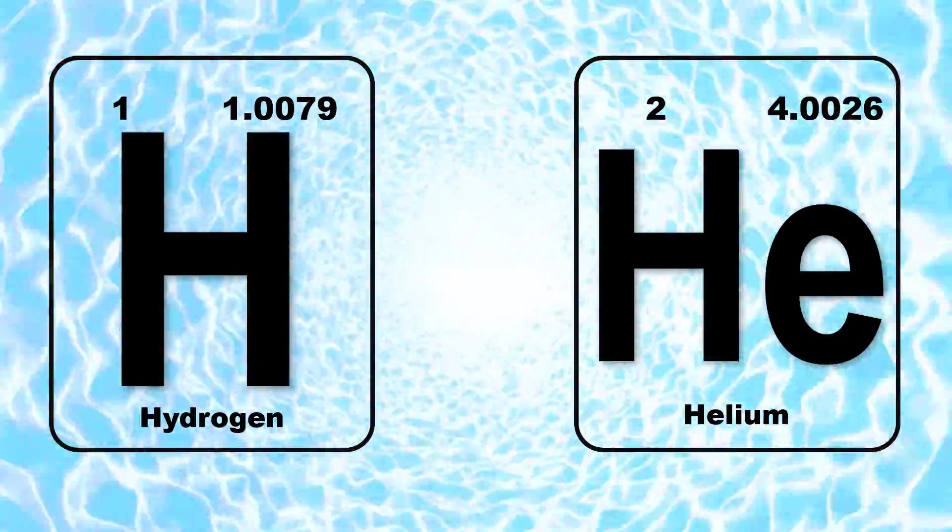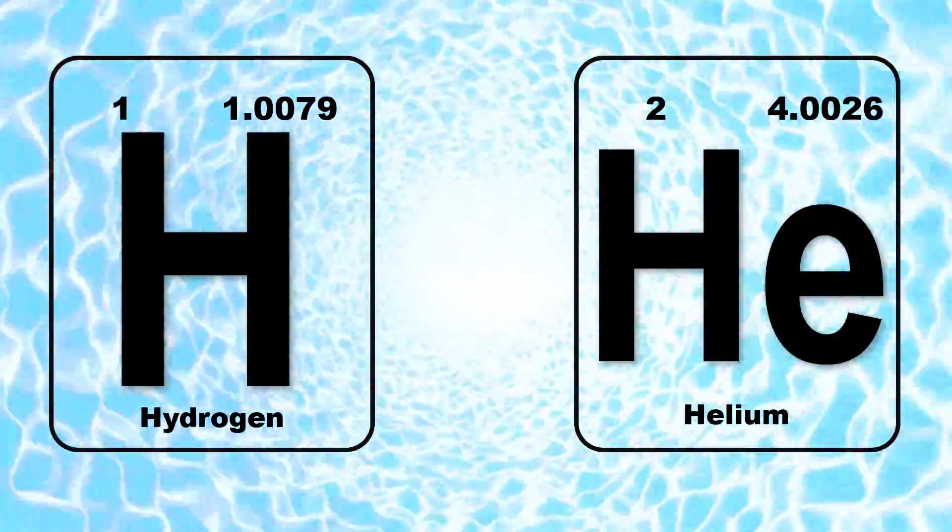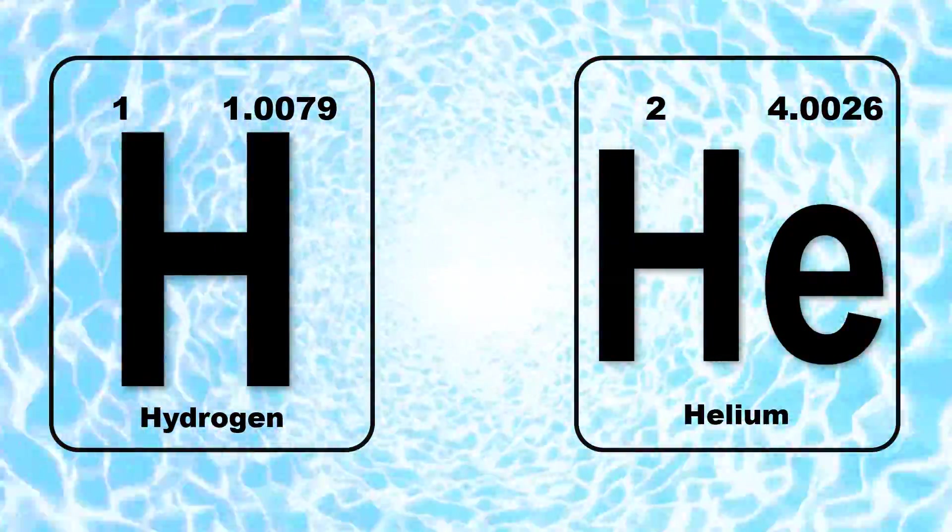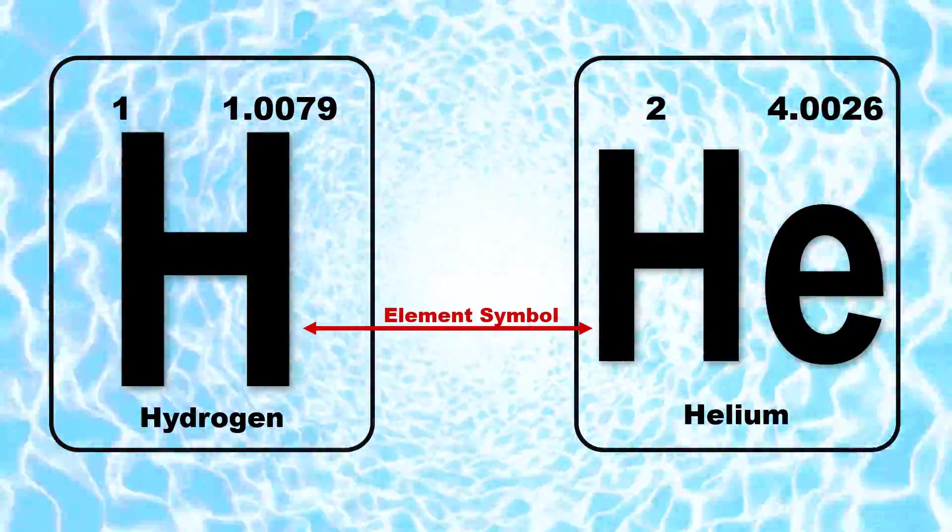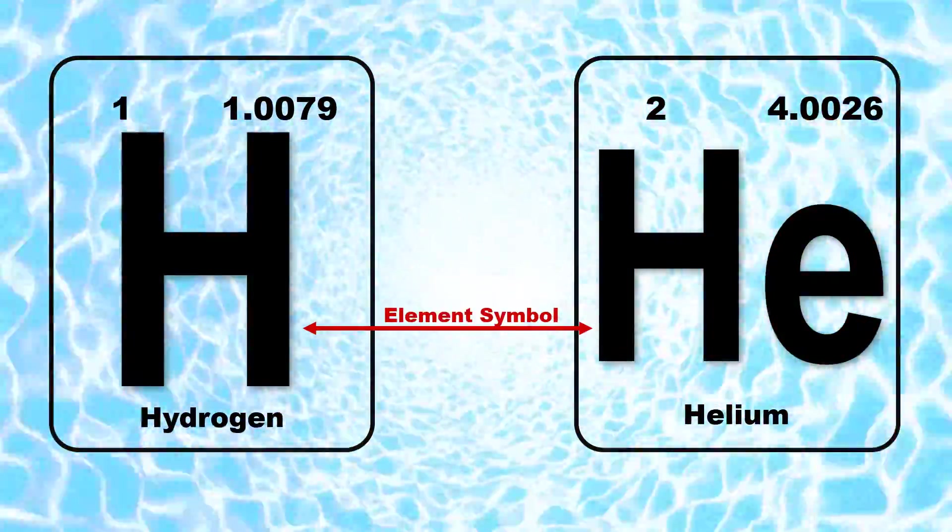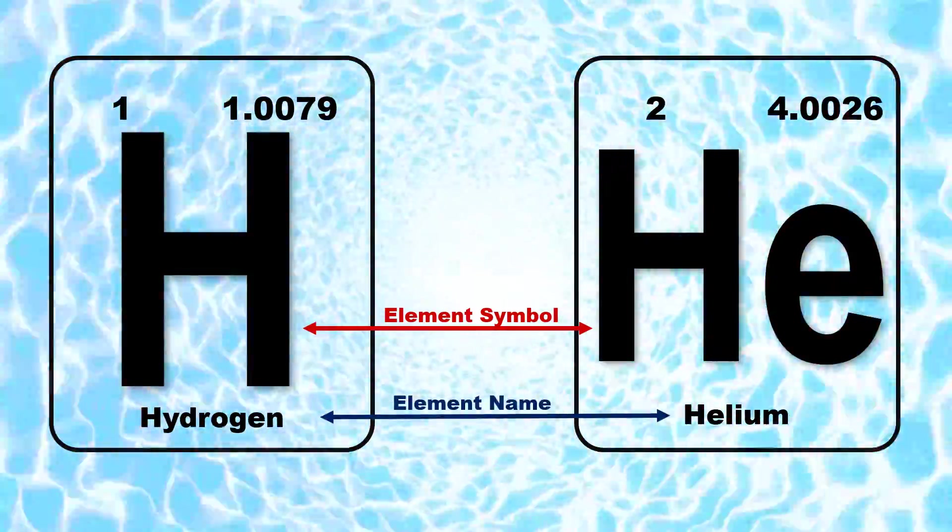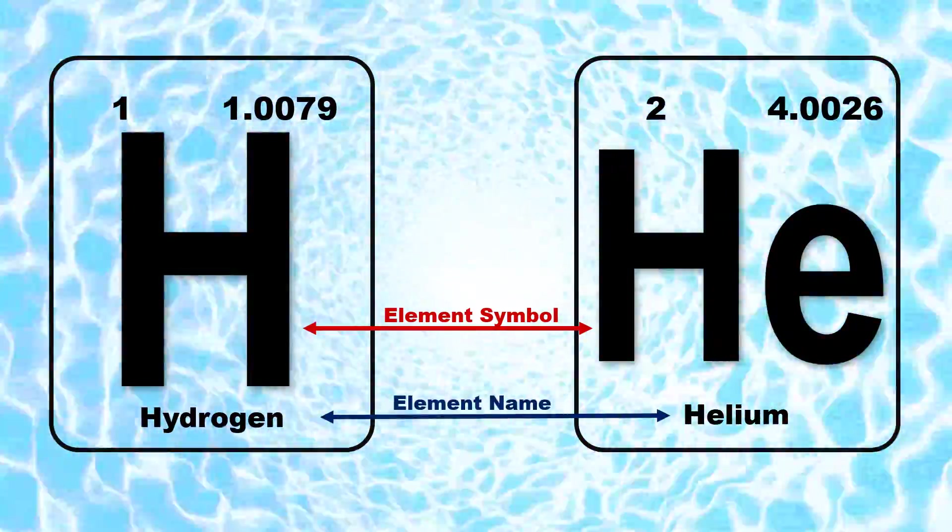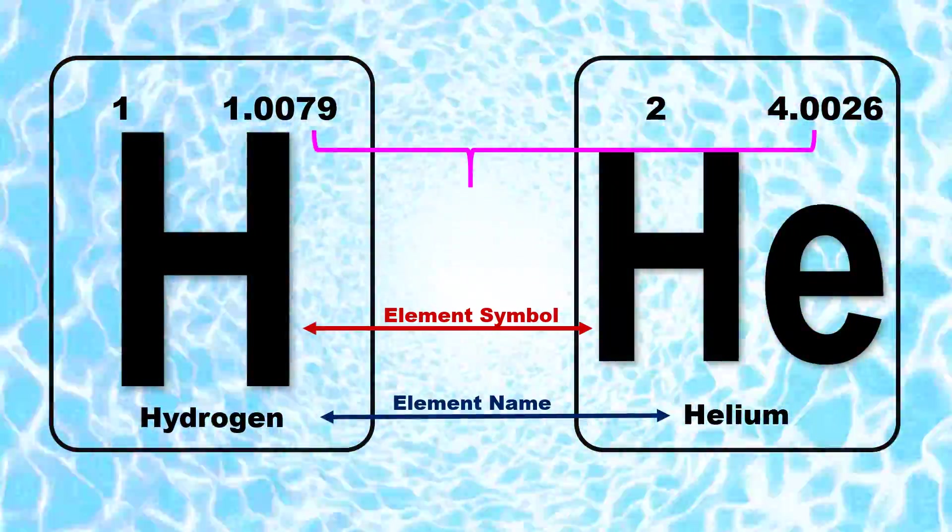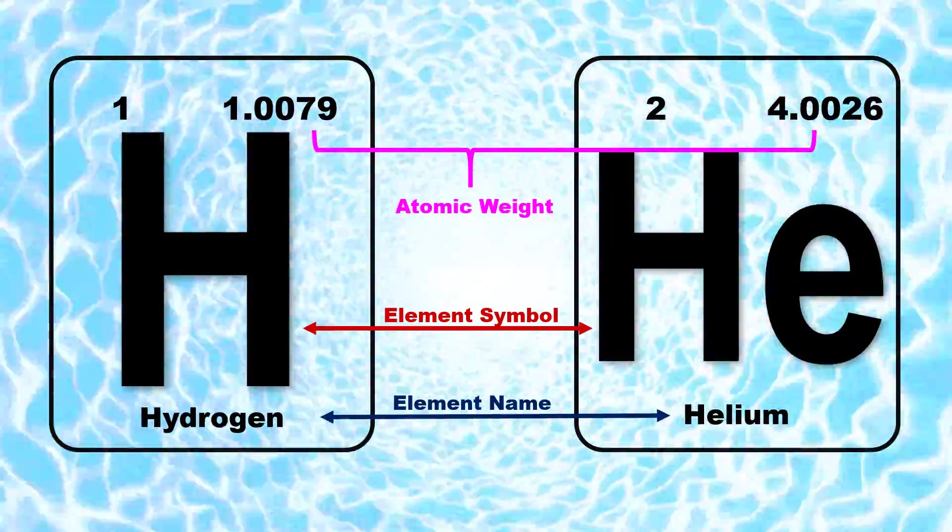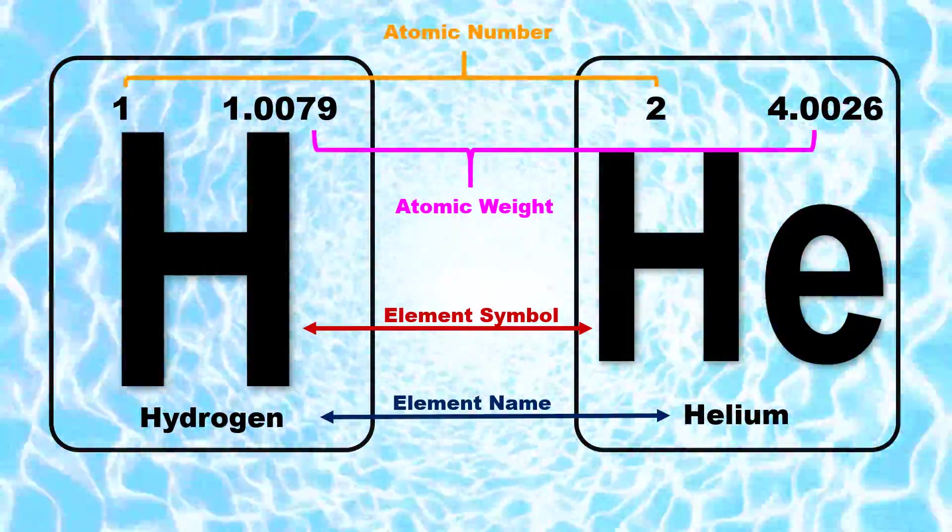Moving on, each element is enclosed inside a box with very important information. This is the element symbol. Under that is found the element name. This information is its atomic weight and this one is the atomic number.